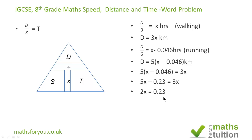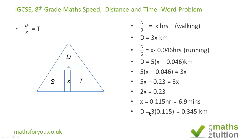So x equals 0.115 hours, or 6.9 minutes. To get the distance, you do three times x — three times the speed — and that gives you 0.345 kilometers. That's your answer.